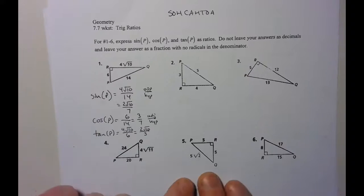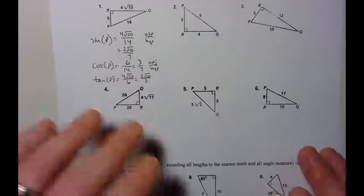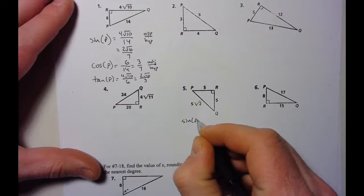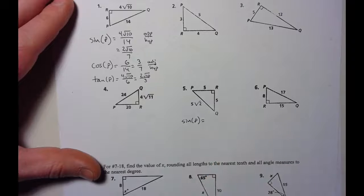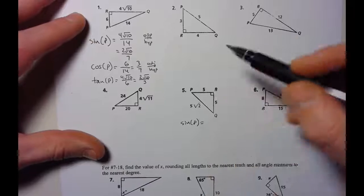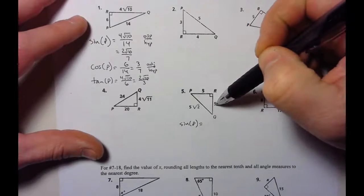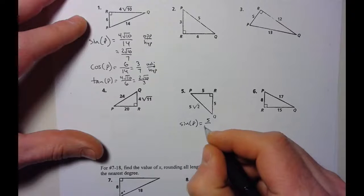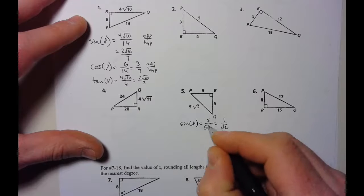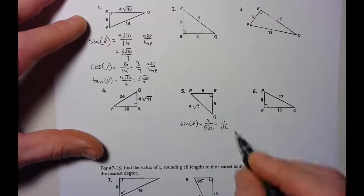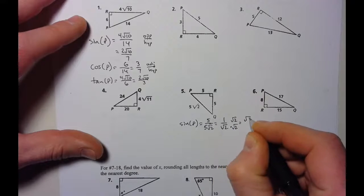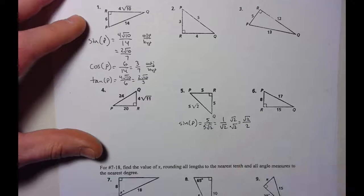Let's try number five. All solutions will be online, but I'll pick a selected few — I don't think you need me to talk through every single one. Skip around the video as you see fit. For sine of p: opposite is 5, hypotenuse is 5√2. The 5s reduce, but I can't leave a radical in the denominator, so I multiply top and bottom by √2 to get √2 over 2. That's my sine of p.